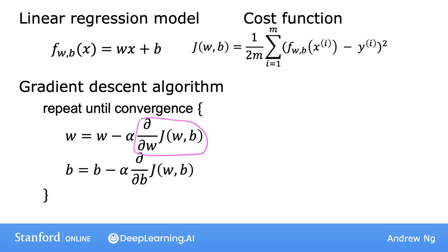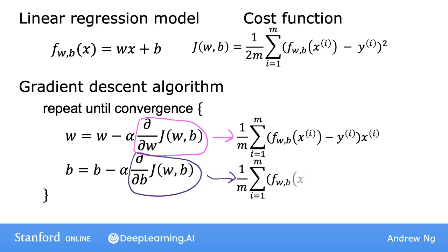The derivative with respect to w is this 1 over m sum from i equals 1 through m. Then the error term, that is the difference between the predicted and the actual values times the input feature xi. And the derivative with respect to b is this formula over here, which looks the same as the equation above except that it doesn't have that xi term at the end. And if you use these formulas to compute these two derivatives and implement gradient descent this way, it will work.